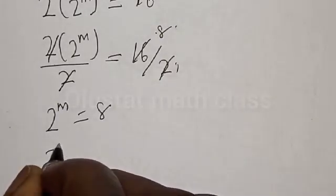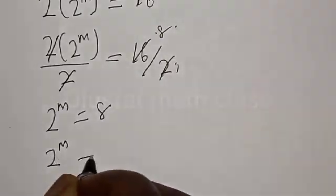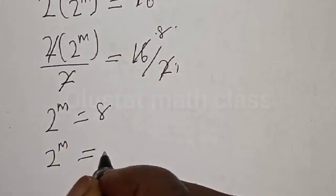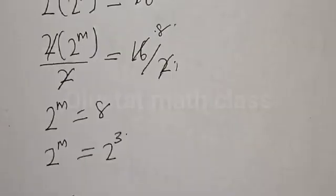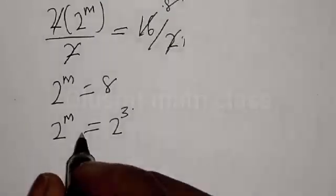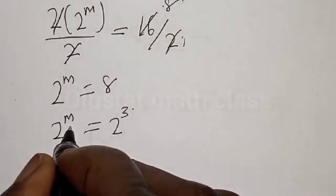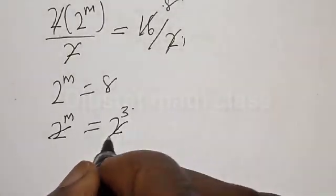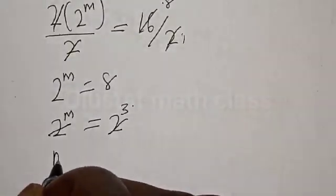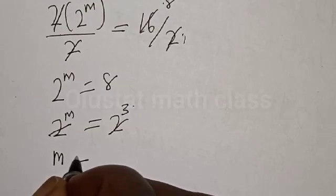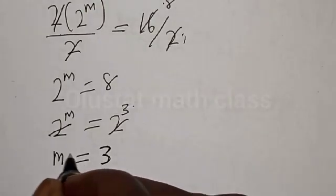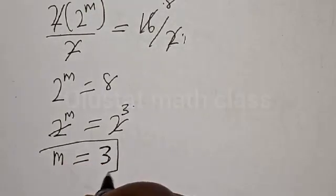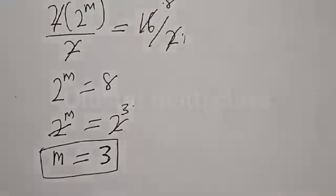We have 2 raised to power m is equal to 8, which is 2 raised to power 3. Since they have the same base, we can equate the exponents: m is equal to 3.